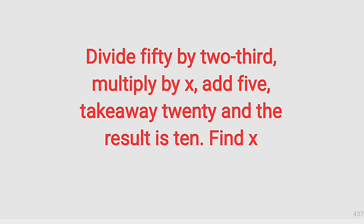Hello, good day viewers. Here is a simple word problem question for JSS1 students. The question reads: divide 50 by two-third, multiplied by x, add 5, take away 20, and the result is 10. What is x?